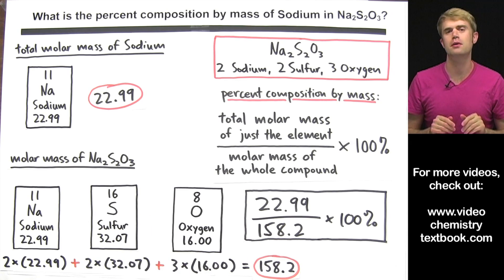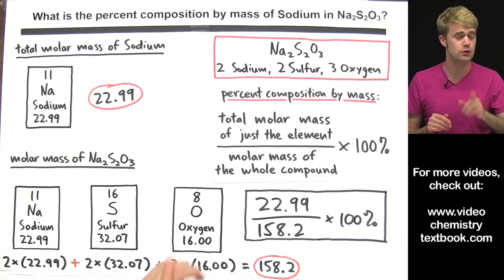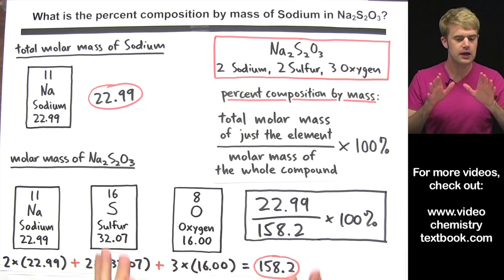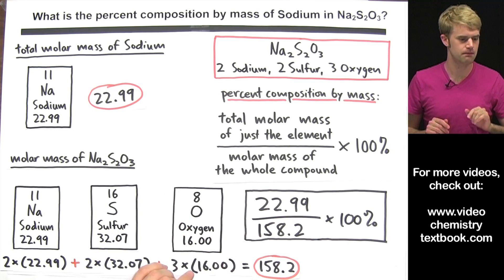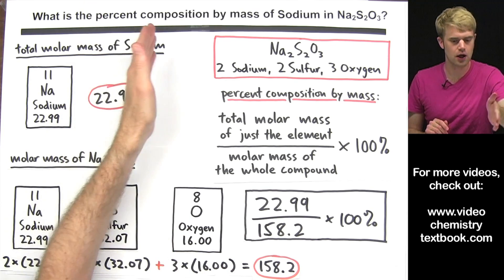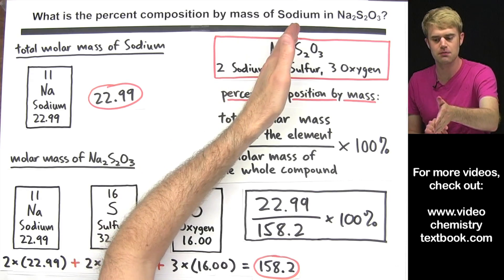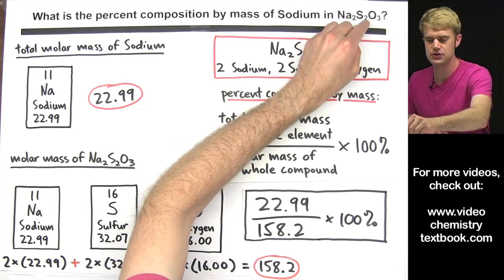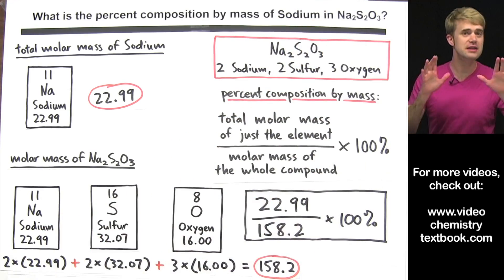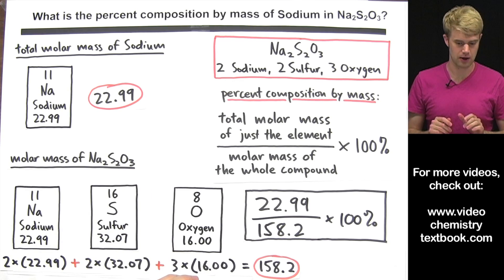I want to talk about two super common mistakes with percent composition so that you won't make them. Here's an example of the first mistake. I'm solving for the percent composition by mass of sodium in Na2S2O3 and I'm intentionally making a mistake here.